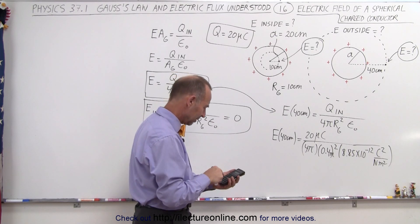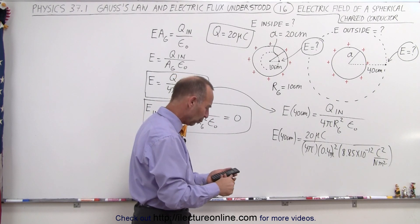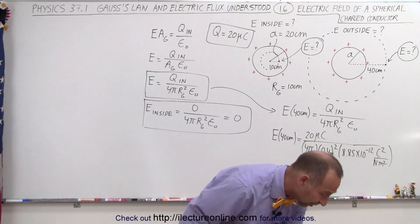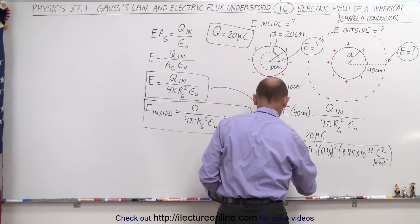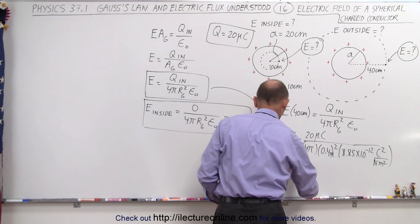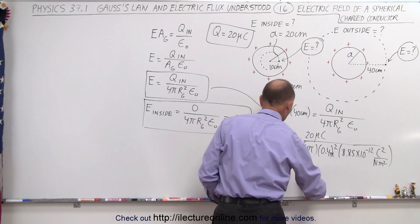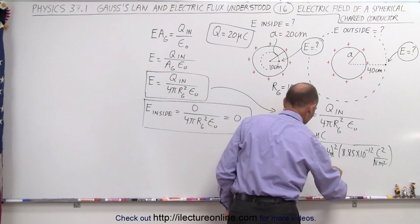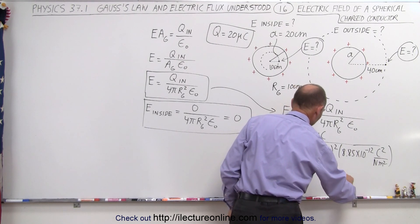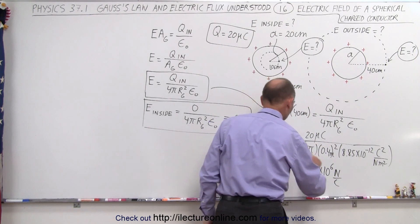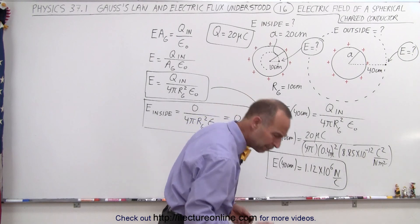Now we have 1.12 times 10 to the 6th, that's quite a powerful field. So E at a distance of 40 centimeters is going to be equal to 1.12 times 10 to the 6th newtons per coulomb, so a little bit over 1 million newtons per coulomb.